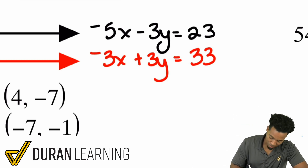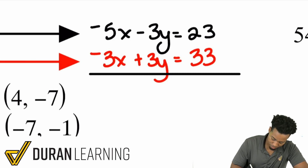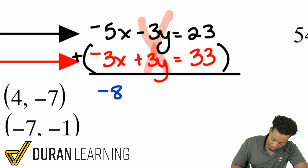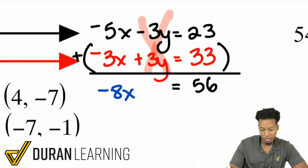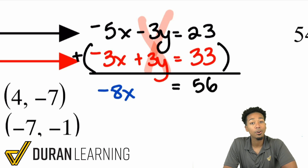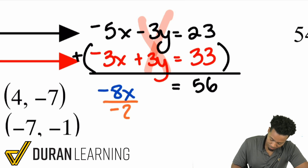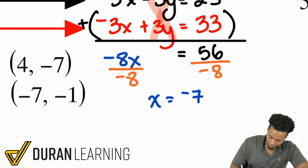Adding these equations together, negative 5x minus 3x is negative 8x; the y's cancel out; and 23 plus 33 is 56. So negative 8x equals 56. Divide both sides by negative 8, and we get x equals negative 7.